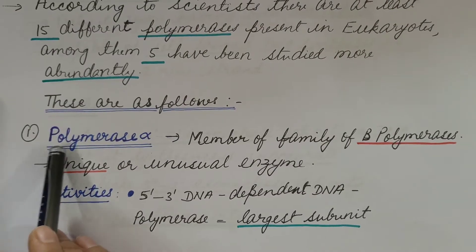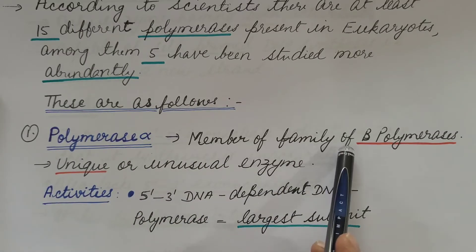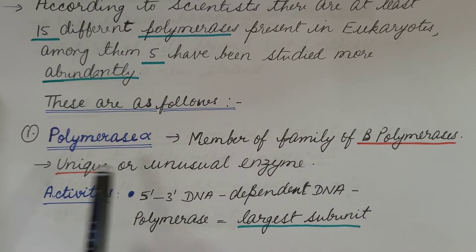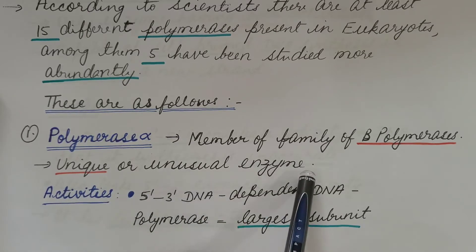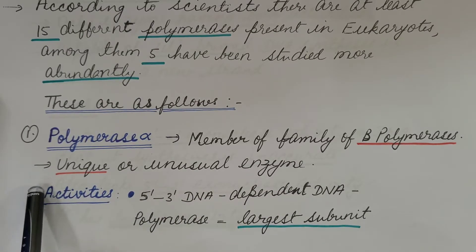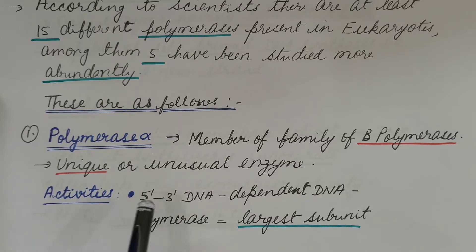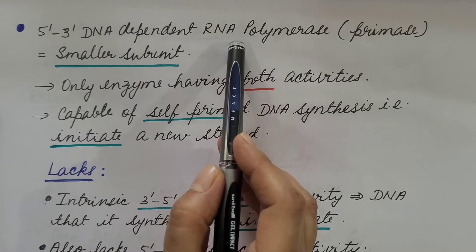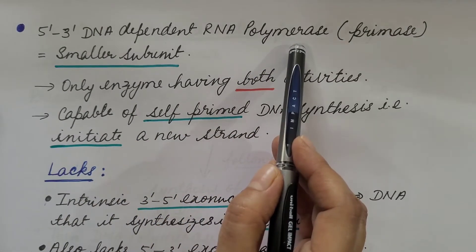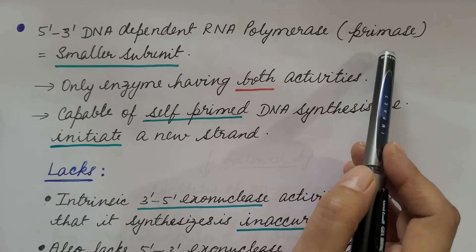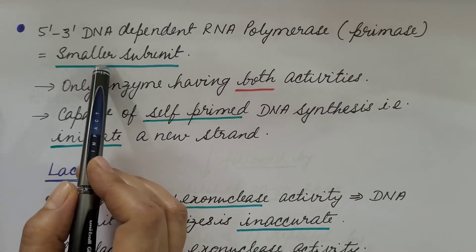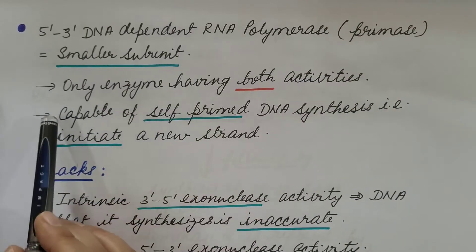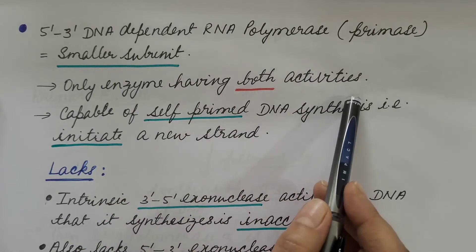First is DNA polymerase alpha. It is a member of the family B polymerases. It is a unique or unusual enzyme. The activities it shows are: 5'-3' DNA-dependent DNA polymerase activity — the largest subunit has this activity — and 5'-3' DNA-dependent RNA polymerase activity, which is also known as the primase activity, which the smaller subunit has. It is the only enzyme which has both activities.